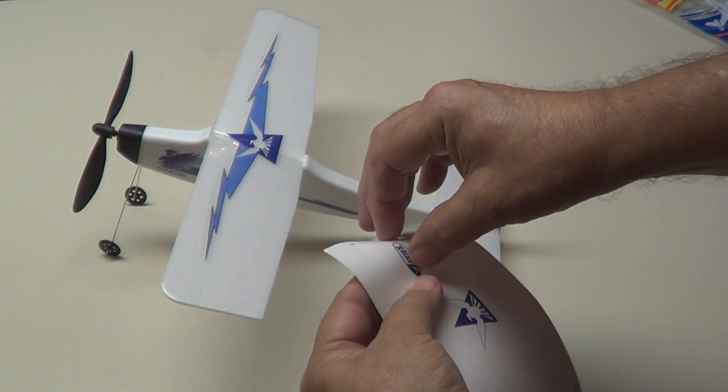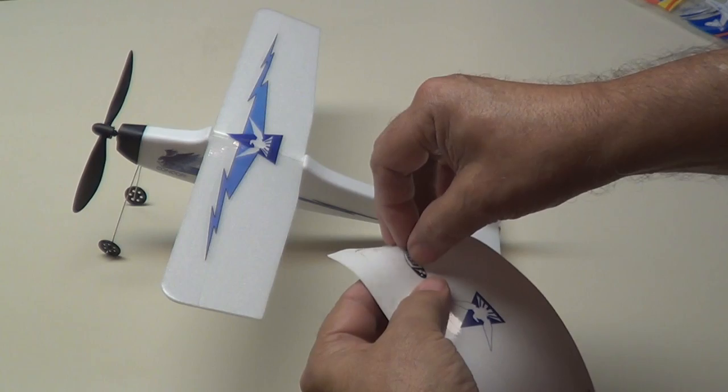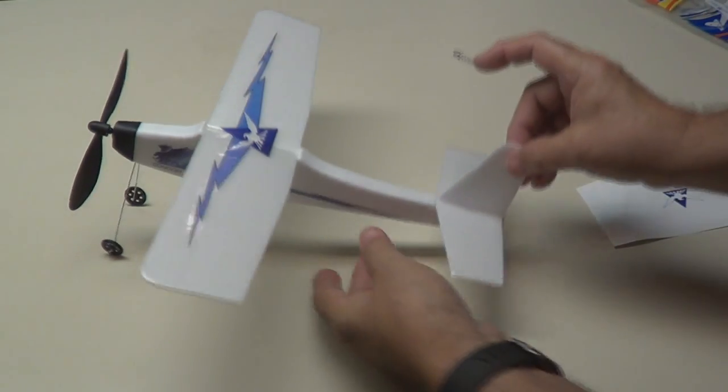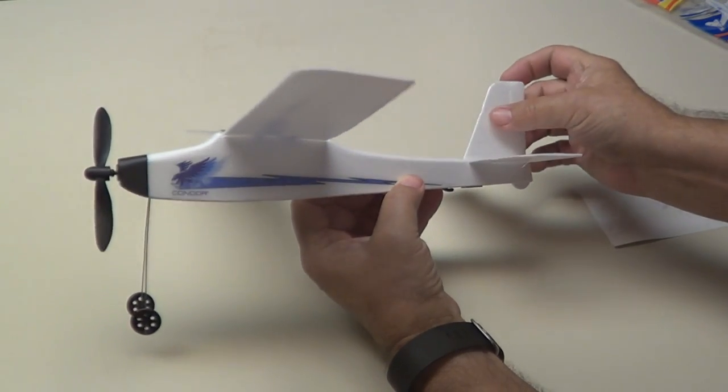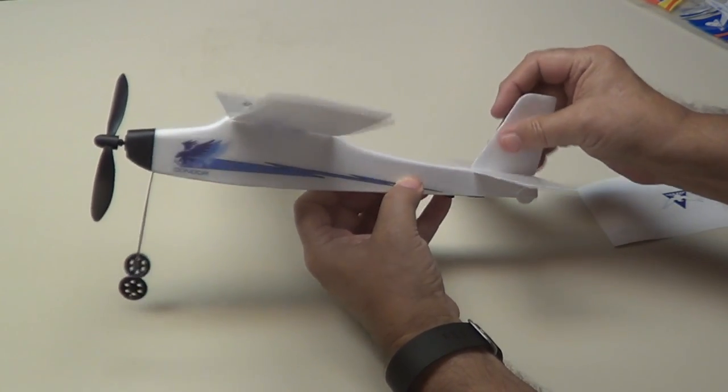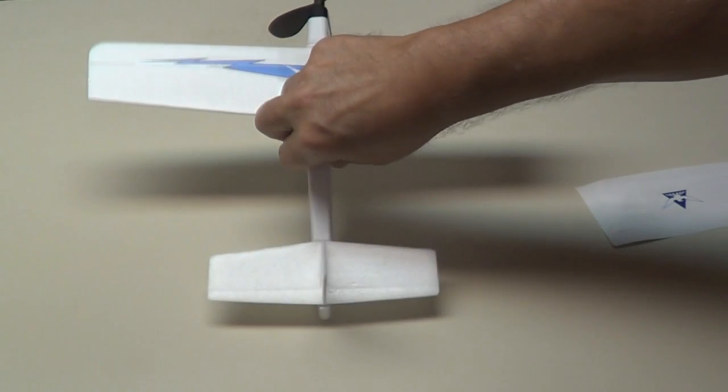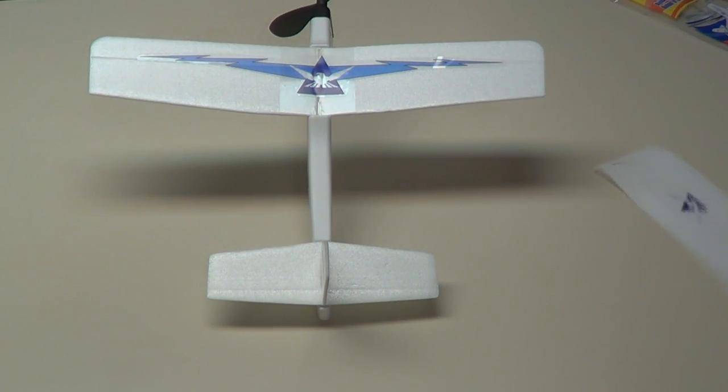Let's put the decals on the rudder and elevator. This Estes goes on the rudder, one on each side, right about here. We go, one to the other side.